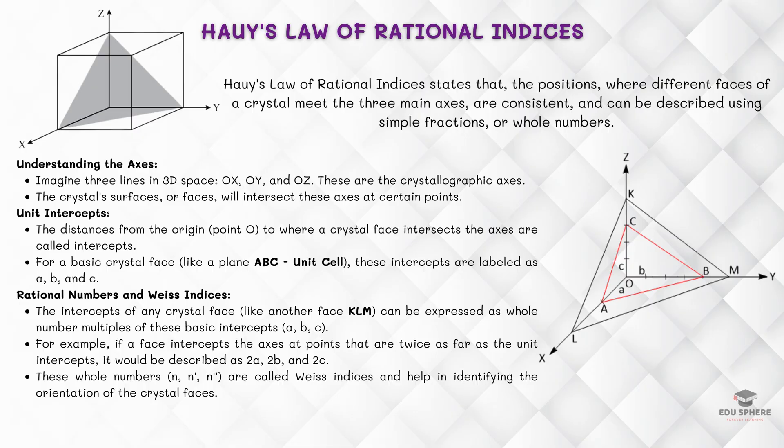If you think of the unit face A, B, C as a base reference, any other face of the crystal can be described using simple multiples of the intercepts A, B, and C. This means the structure of the crystal is mathematically predictable and consistent. This law allows scientists to describe and predict the geometry of crystals using simple mathematical terms, making it easier to study and categorize them.